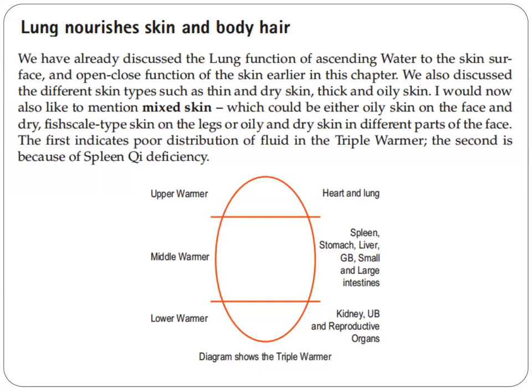Now, let's talk about lung nourishing skin and body hair. We have already discussed the lung function of ascending water to the skin surface and the open-close function of the skin earlier in this chapter. We also discussed different skin types such as thin and dry skin, thick and oily skin. The author would also like to mention mixed skin, which could be either oily skin on the face and dry fish-scale-type skin on the legs, or oily and dry skin in different parts of the face. The first indicates poor distribution of fluid in the triple warmer. The second is because of spleen qi deficiency.